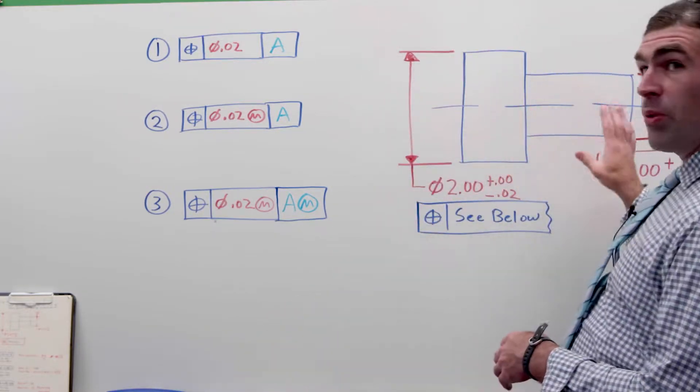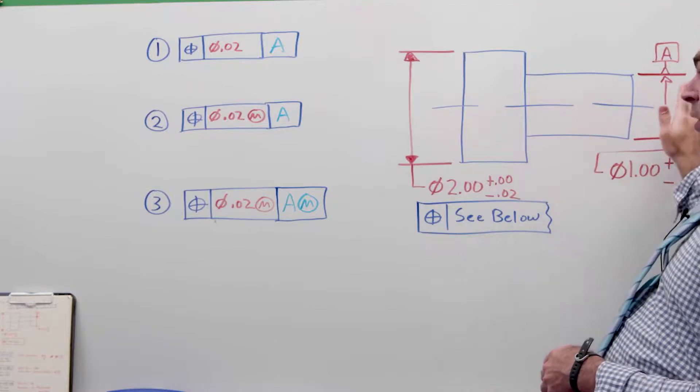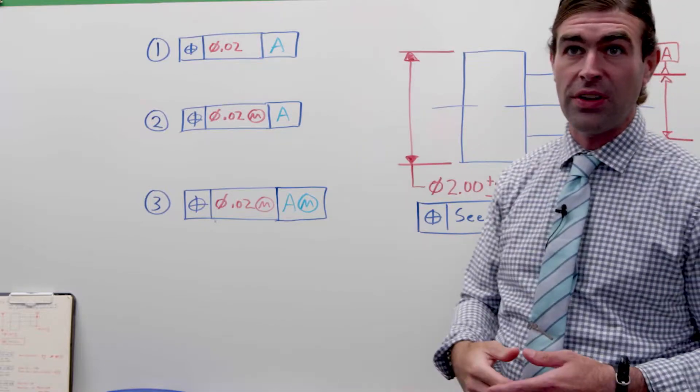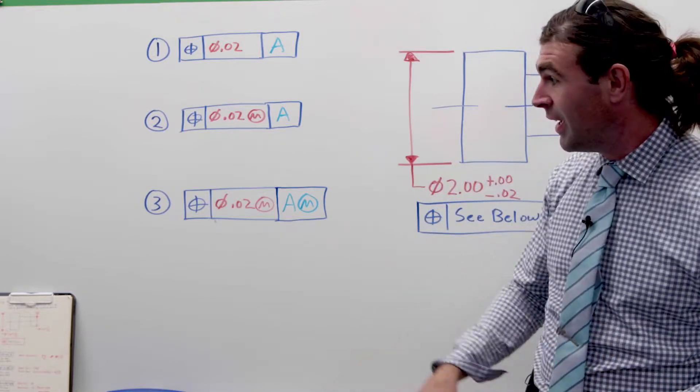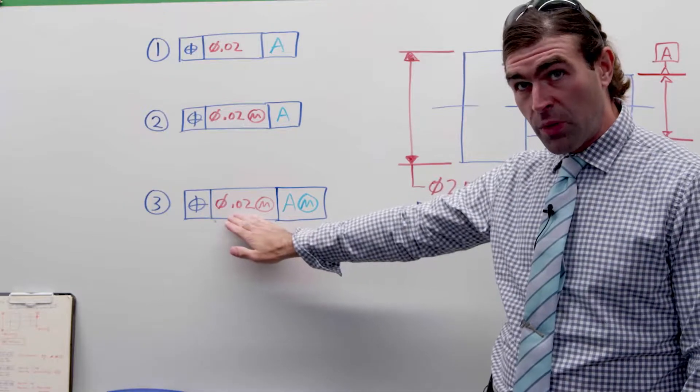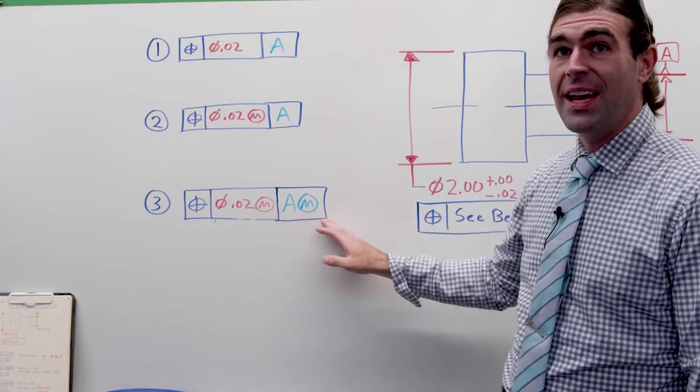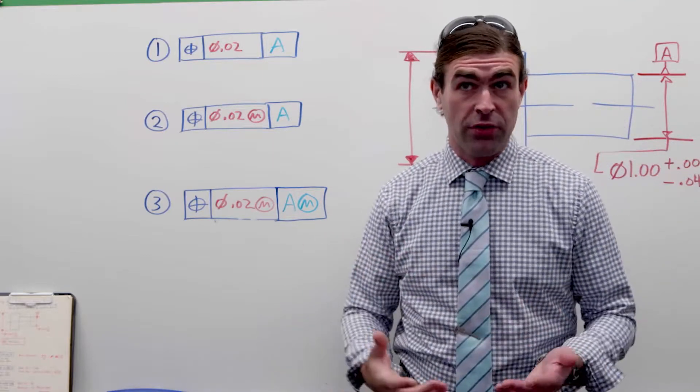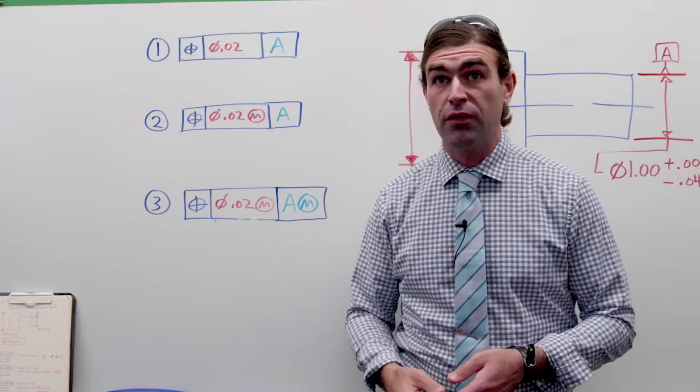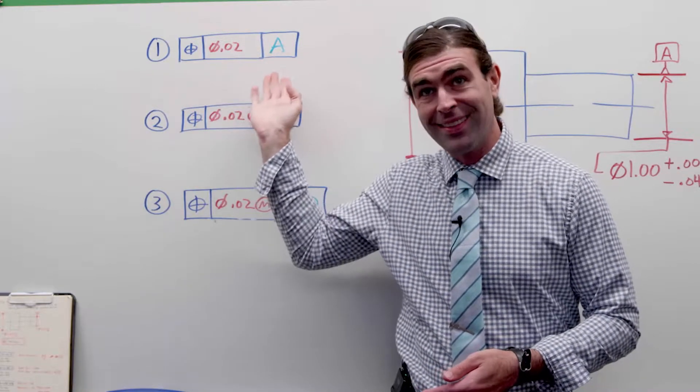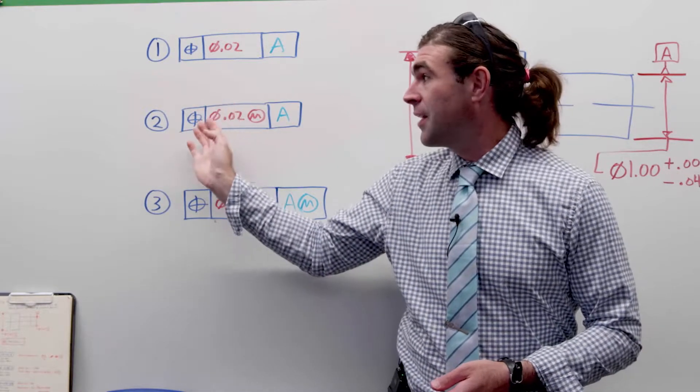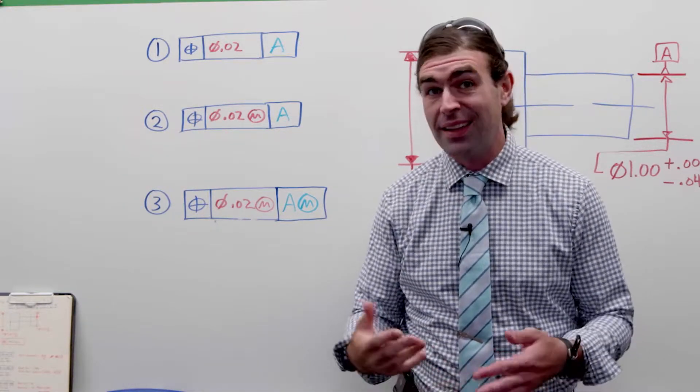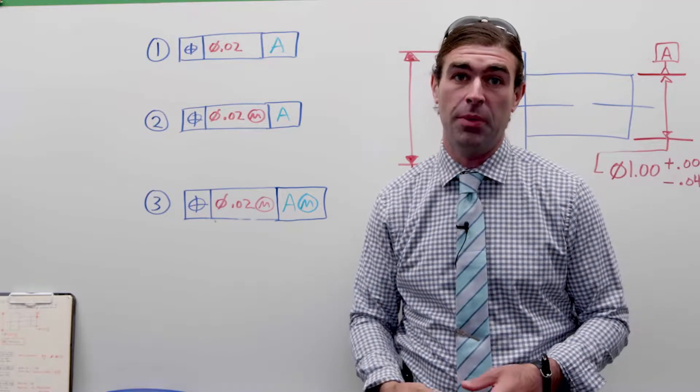So what I mean is we've got two coaxial cylinders. One is the datum, one is a cylinder being controlled with the position tolerance. The question is normally given as the position at MMC and the datum at MMB. But I think it'd be more instructive to talk about the position at RFS, the datum at RFS, the position at MMC with the datum at RFS, and then the position at MMC and the datum at MMB.